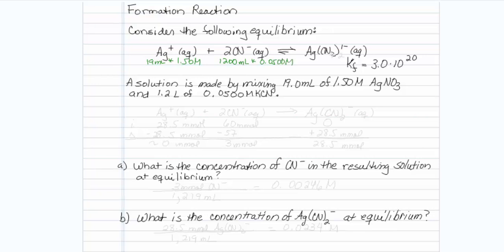So just so I don't get lost, I'm going to write these down below. So silver plus aqueous, plus 2CN minus aqueous, pretty much going 100% to the right to make my silver cyanide, that should be outside the brackets, aqueous complex.